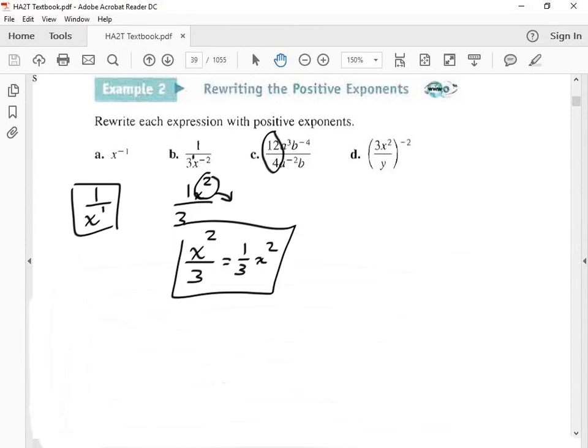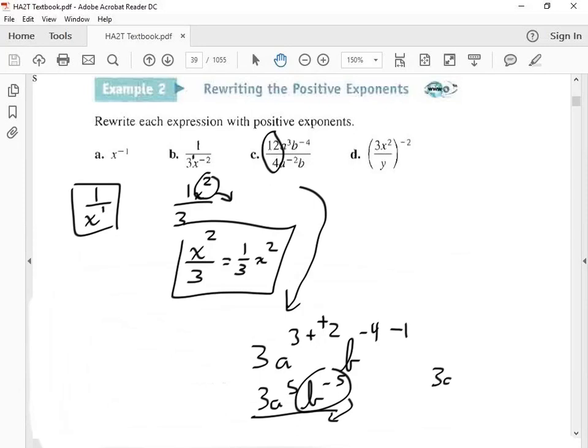This next one, we first look at the 12 and the 4, and we simplify the 12 over 4. When we simplify the 12 over 4, we get 3. Next, let's just do the subtraction rule. So we have a³⁻⁽⁻²⁾, and then we have b⁻⁴⁻¹. Let's simplify. We get 3a⁵, and for the b, we get negative 5. Because b has a negative, we're going to drop him like he's hot and put him on the bottom of the denominator. So we get 3a⁵ over b⁵. They both have a 5. That's your answer.